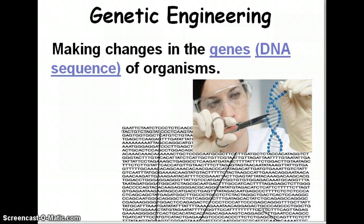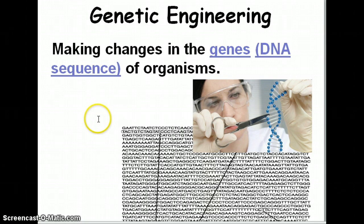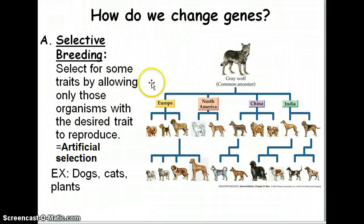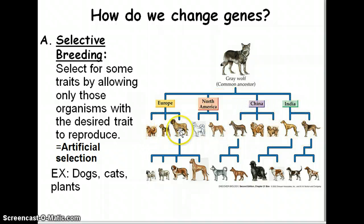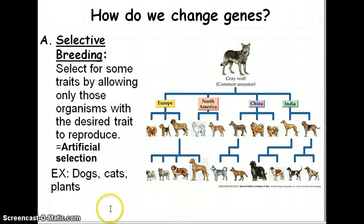The topic we're going to be talking about today is genetic engineering. Genetic engineering is simply the process whereby we can make changes in the genes — those letters — or the sequence of DNA in organisms. Historically we changed the genes of organisms through breeding. Here we have a picture of a gray wolf, and in different regions of the world we were able to selectively breed the gray wolf and come up with all the different lines of dogs we have today. We call that process artificial selection because man is selecting the desired traits we want to breed this animal to produce.